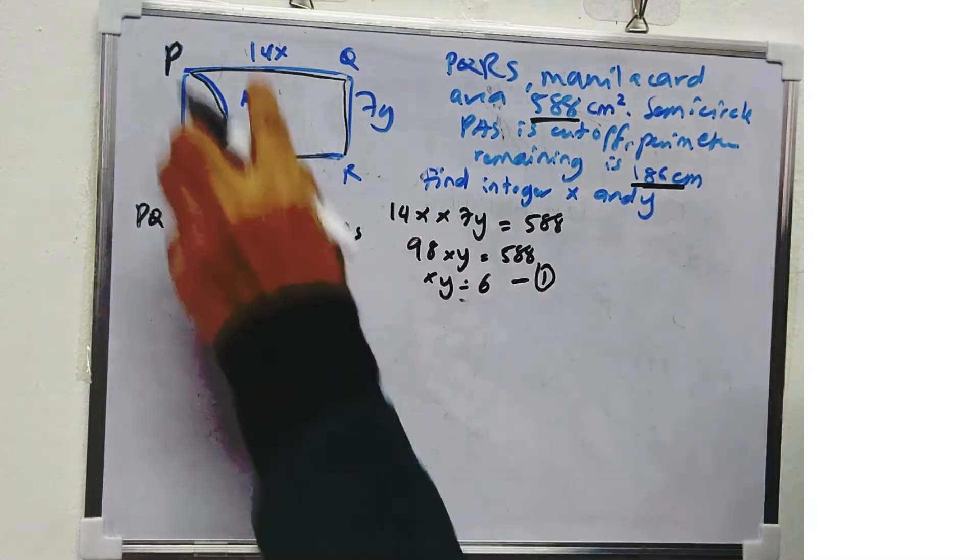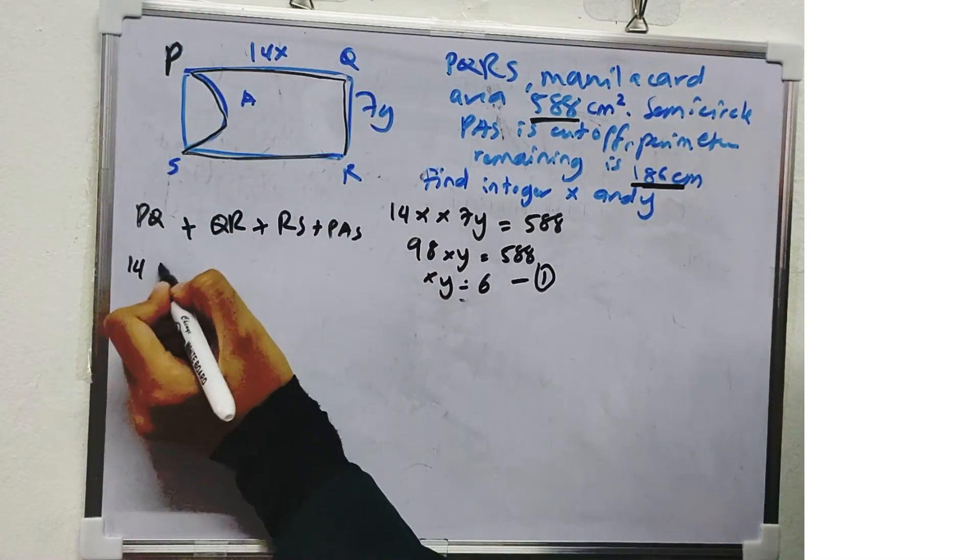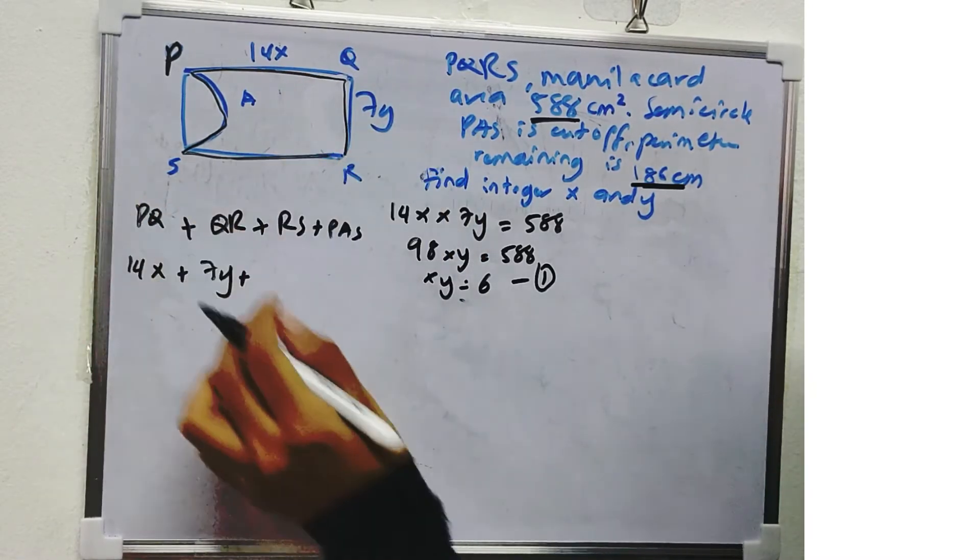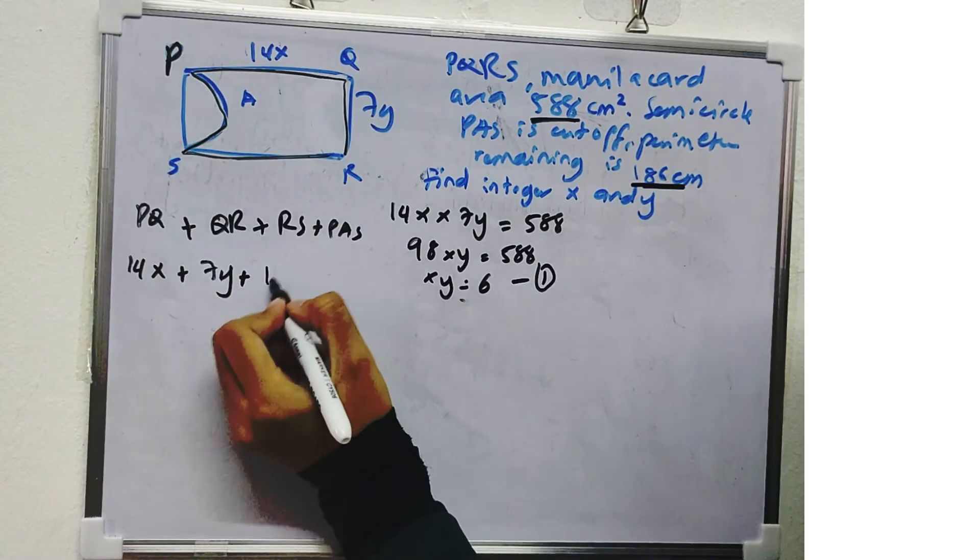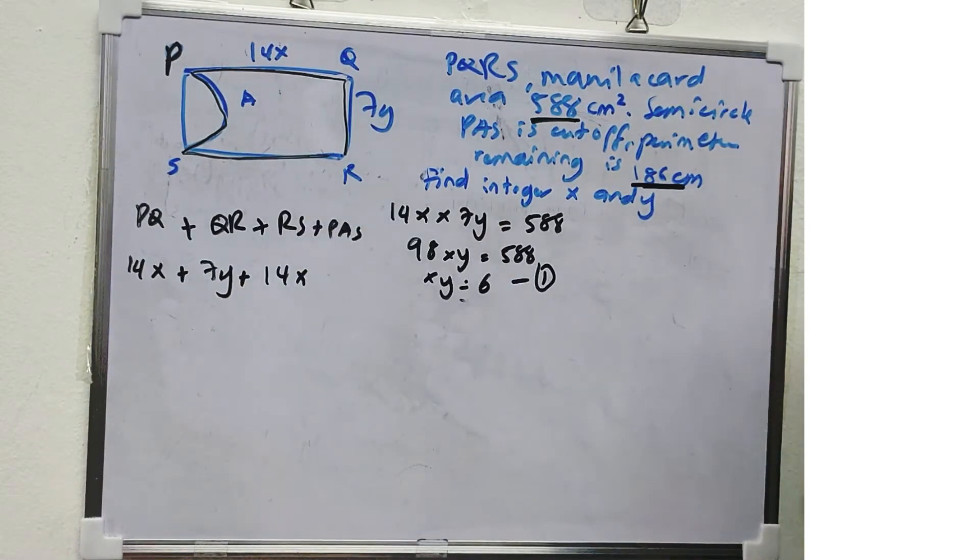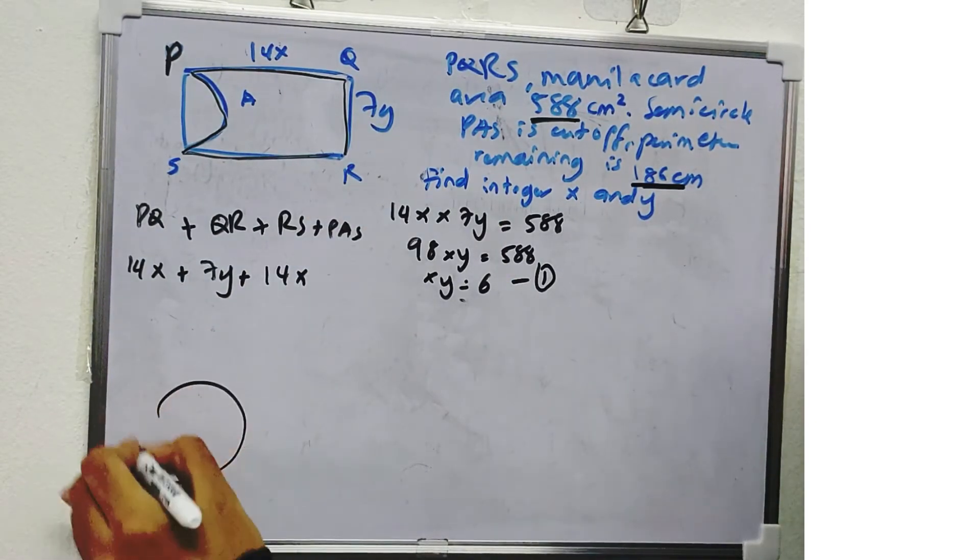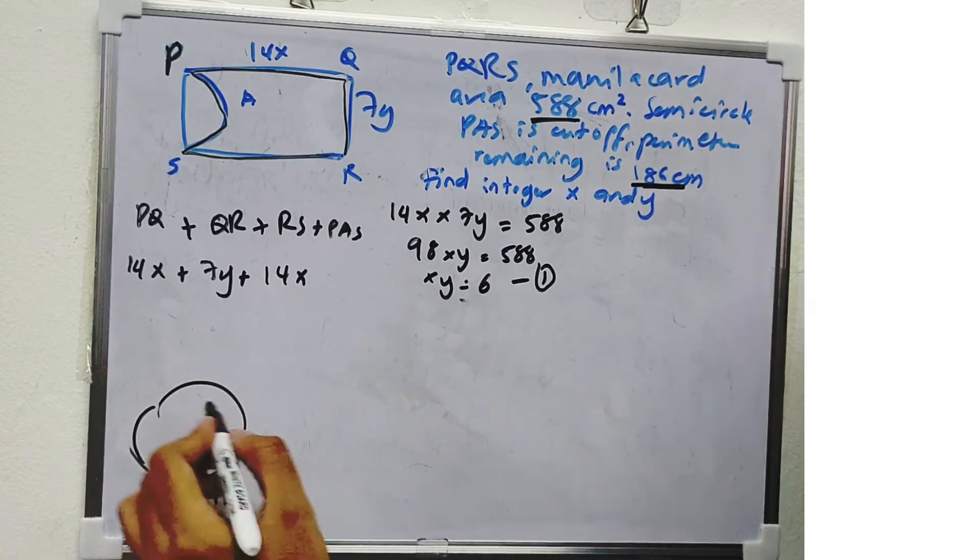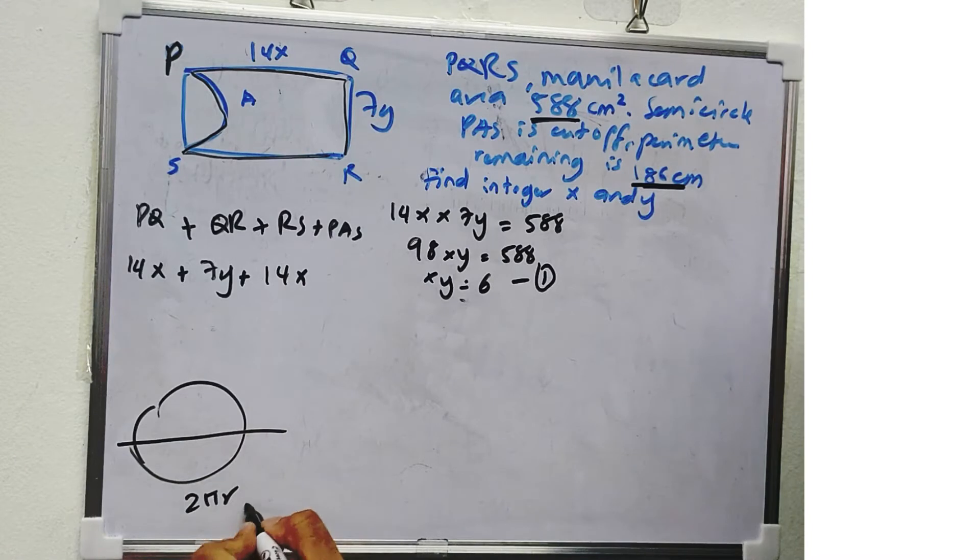So PQ is 14X, QR is 7Y, and RS is same, 14X. How to get PAS? So we see here, the radius, the perimeter of circle is 2πR. So the perimeter of half is πR, right?